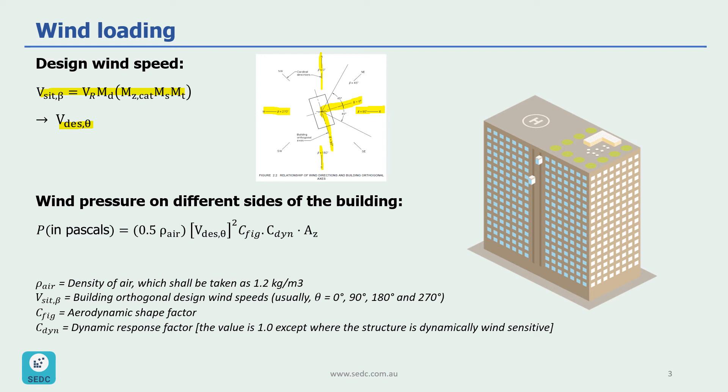The second step is to measure wind pressure on different sides of the building with this formula as you can see in here. P or wind pressure is measured in pascals and it's a factor of ρ, which is density of the air, which is 1.2 kilograms per cubic meter. V_design,θ, which we have explained before.